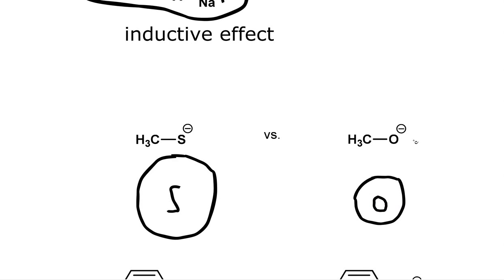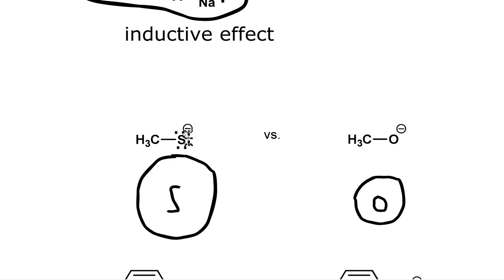They each have some lone pairs on the sulfur atom and the oxygen atom. However, this sulfur is bigger — so what does that mean? We can spread these lone electrons around the atom better than we can in this oxygen, because this oxygen is much smaller. So the oxygen is going to be more electron dense. Since this oxygen is smaller, it does not have enough room to spread out that charge and stabilize it. This sulfur on the other hand is much bigger — we can spread out those charges, so that's more stable.